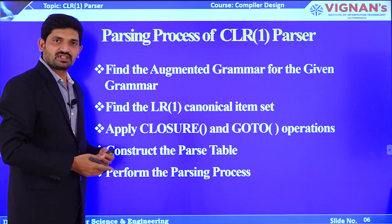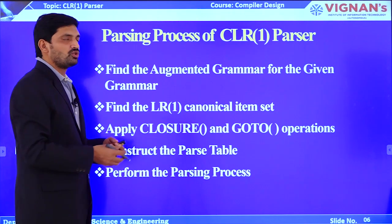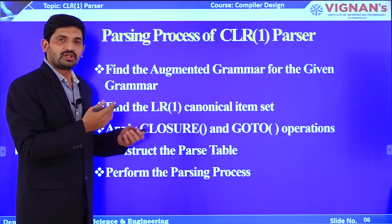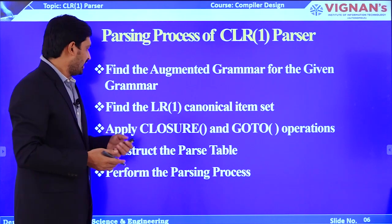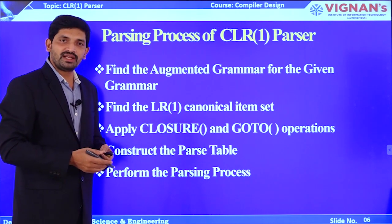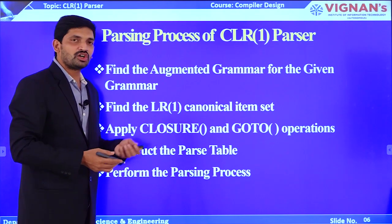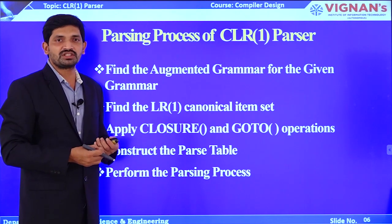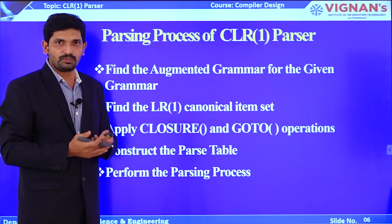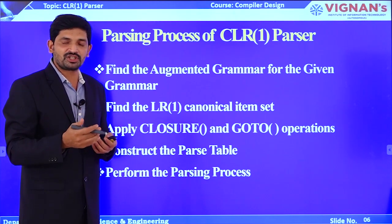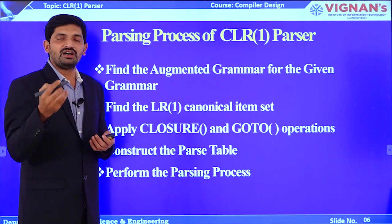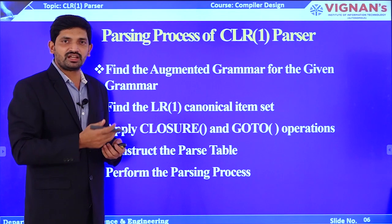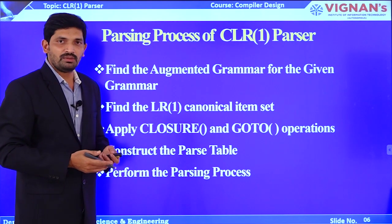The parsing process of CLR 1 parser: we have to find the augmented grammar by adding the augmented production to the given grammar. Then we find the LR 1 canonical item set by applying the closure and goto operations. After finding the canonical item set, we construct the parse table consisting of the action and goto parts. We place reduction operations at final items in the lookahead symbol positions only. Using this parse table and LR 1 canonical item set, we perform LR 1 parsing.